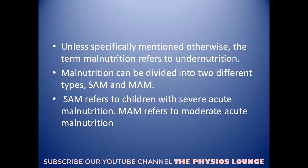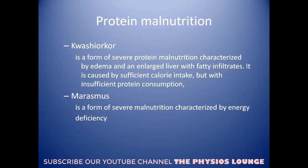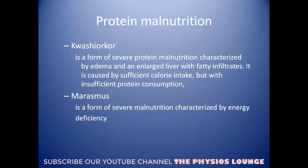Malnutrition can be divided into two types: SAM refers to children with Severe Acute Malnutrition, and MAM refers to Moderate Acute Malnutrition. Protein malnutrition is also divided into two types. Kwashiorkor is a form of severe protein malnutrition characterized by edema and an enlarged liver with fatty infiltrate — calorie intake is sufficient but protein consumption is insufficient. Marasmus is a form of severe malnutrition characterized by energy deficiency.